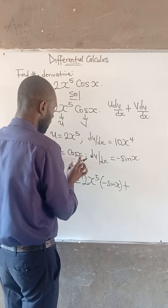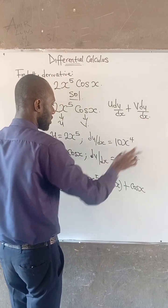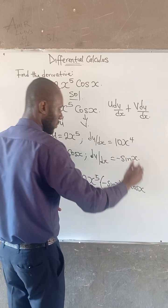v is given as cos x, and then du/dx is given as 10x to the power of 4.